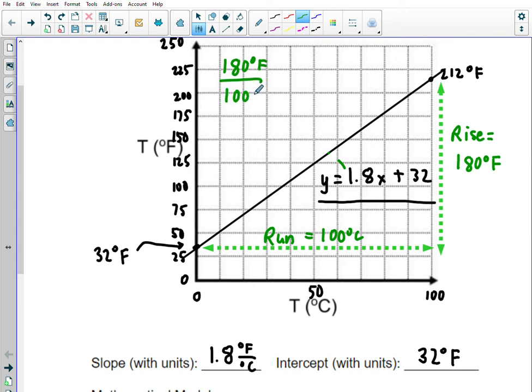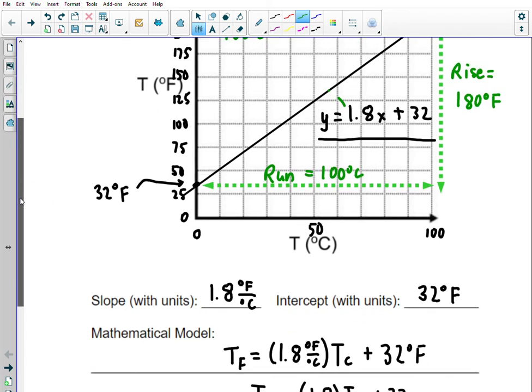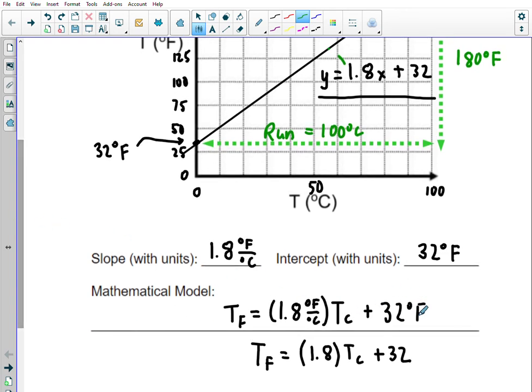If I divide out rise over run—180 degrees Fahrenheit over 100 degrees Celsius—that's where the 1.8 comes from. So if I warm something up by 1 degree Celsius, I actually warm it up 1.8 degrees Fahrenheit. Another way to think about this is 1.8 degrees Fahrenheit per 1 degree Celsius; it's the ratio of how much the Fahrenheit temperature changes per 1 degree Celsius change. If you can remember that, you can figure out the slope pretty quickly. If you know that the intercept is 32, then you've built your equation for Fahrenheit versus Celsius.